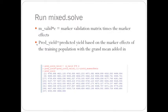So to get the predicted yield, it's the predicted yield based on the marker effects of the training population with the grand mean added in. And the grand mean is the dollar sign beta, which is output from the mix.solve command. So this is the predicted yield of the 58 individuals in our validation population.